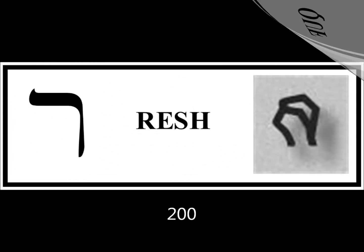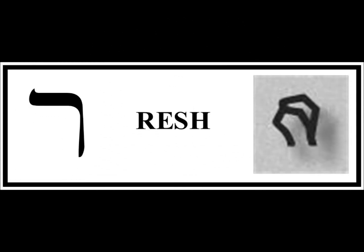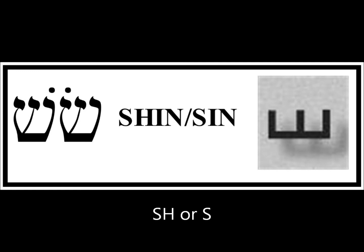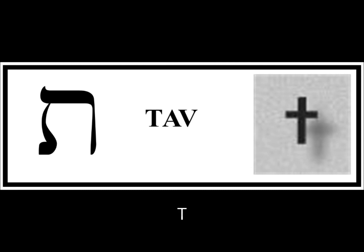Resh has a numerical value of 200. Its pictograph is the depiction of a head, and it has an R sound. Shin can be pronounced 'shin' or 'sin,' and can have either an SH or an S sound. Its numerical value is 300, and its pictograph is of a tooth. The last letter of the Aleph Beit is Tav. It has a T sound. Its numerical value is 400, and it is a picture of a cross or a mark. This concludes the 22 letters of the Aleph Beit.